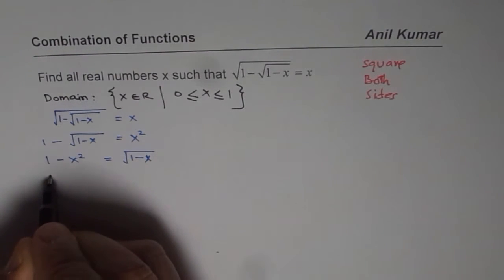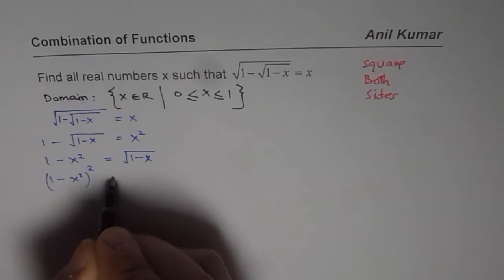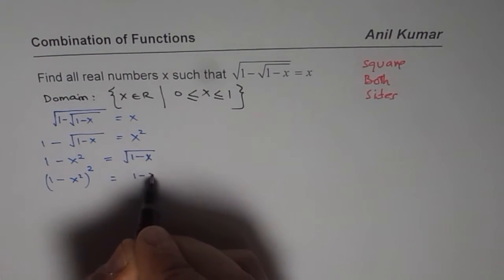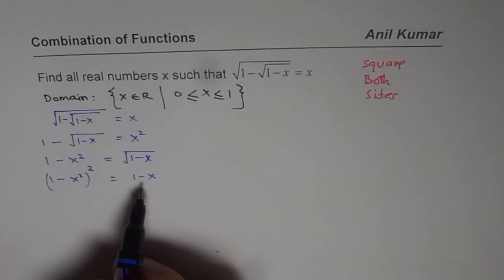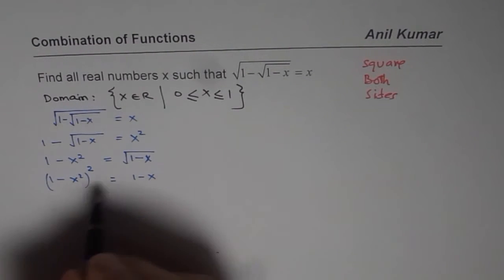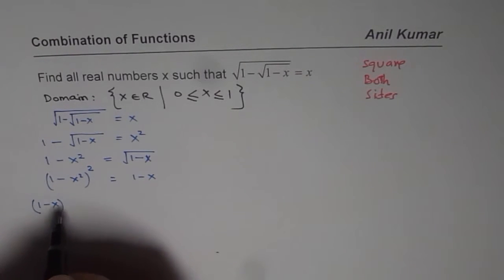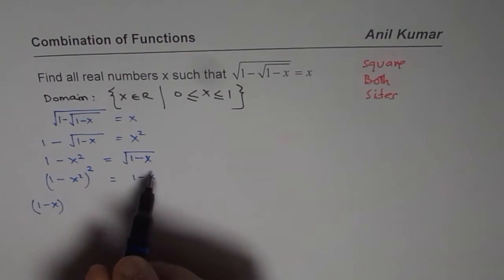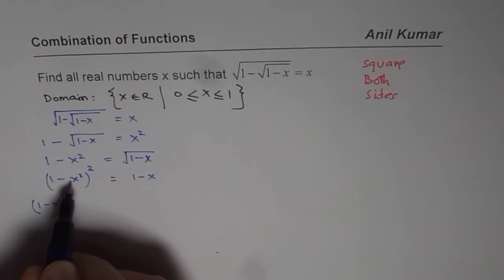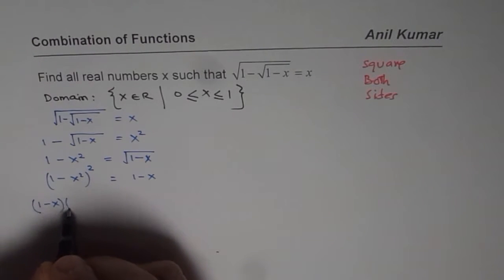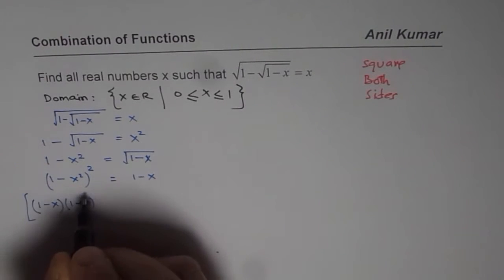So I will bring the radical to one side and square again: 1 minus x squared equals square root of 1 minus x. Now let us square again — we get (1 minus x squared) whole squared equals 1 minus x. Now, 1 minus x squared can be written in factored form as (1 minus x)(1 plus x), whole squared.